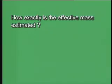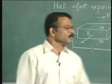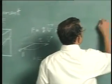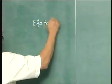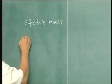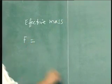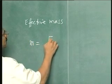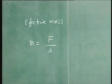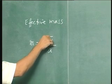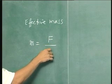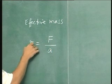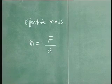Question: How exactly is the effective mass estimated? The effective mass is estimated using the simple formula: mass equals force divided by acceleration. You apply a force, observe the acceleration that the particle gains, take the ratio of force to acceleration, and you get the effective mass.